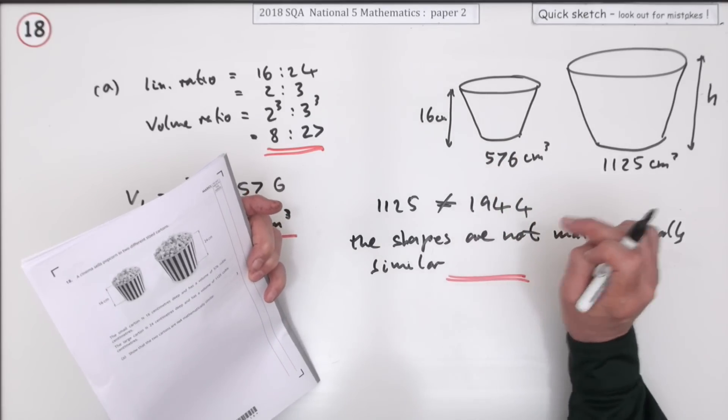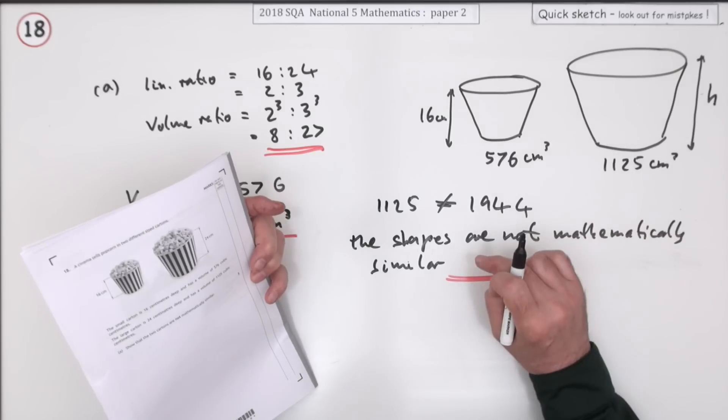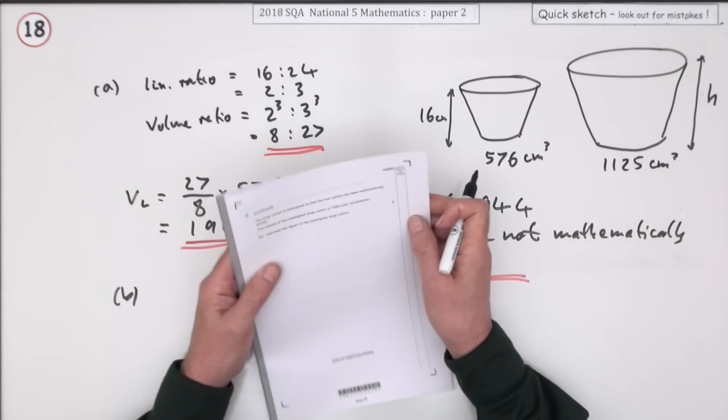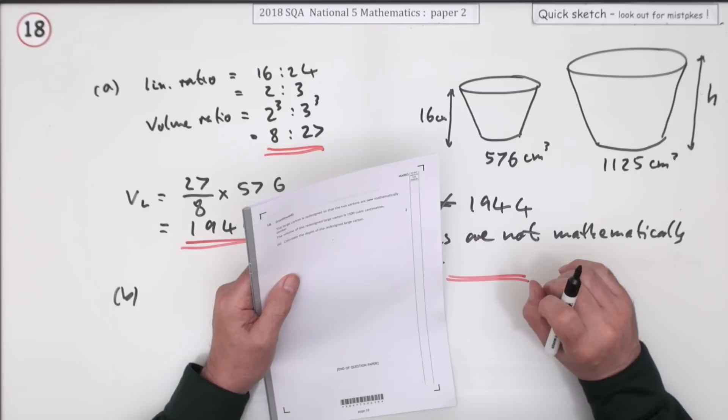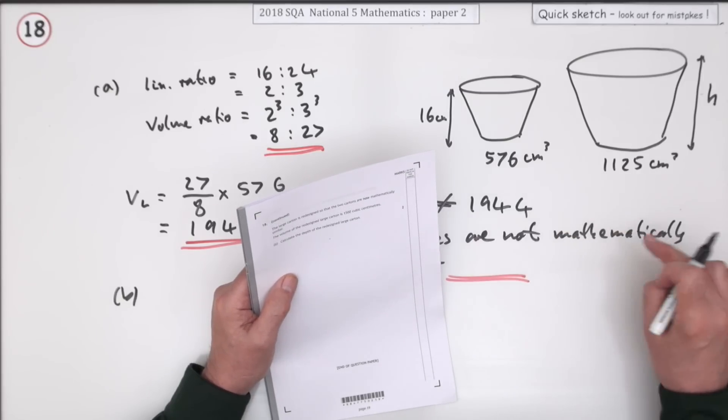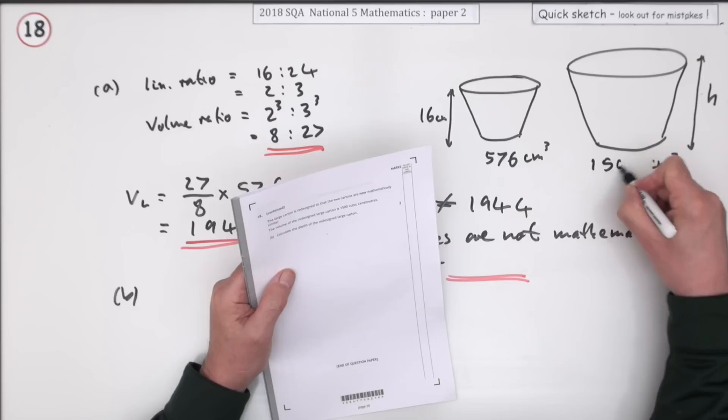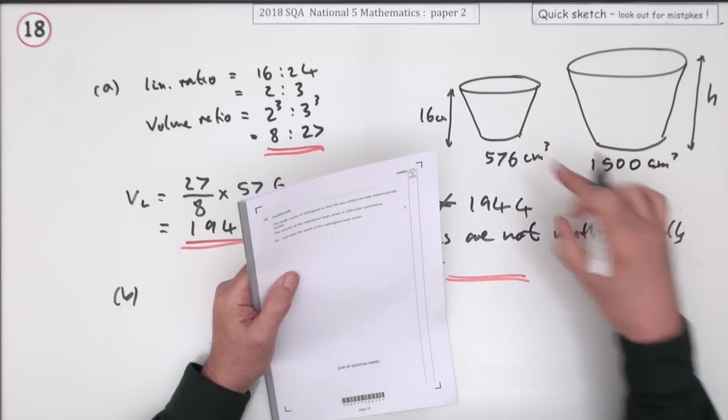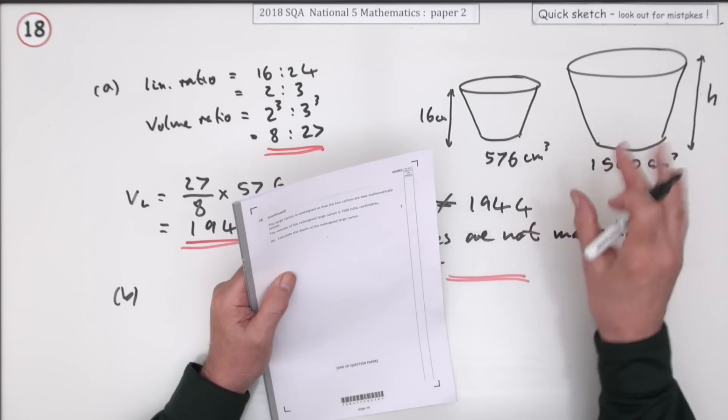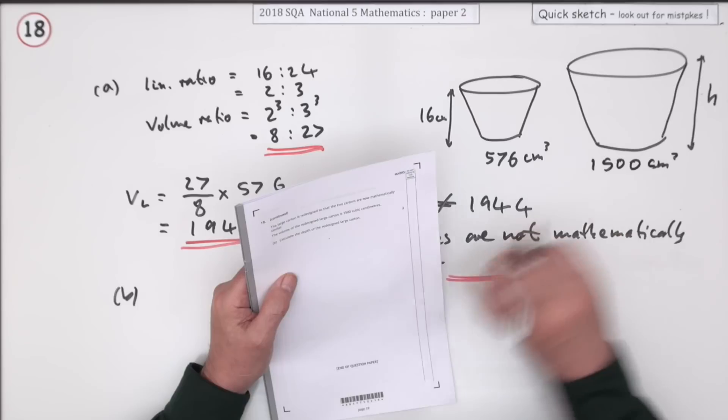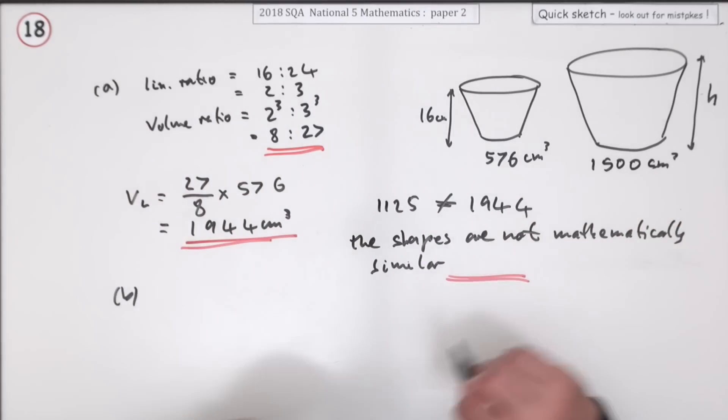Those volumes would be actual prices you'd pay: small tub 576, big tub 1125. Oh wait, they're not mathematically similar. Let's redesign this tub so it's now 1500, mathematically similar. That'll cost you 15 pounds, thank you.